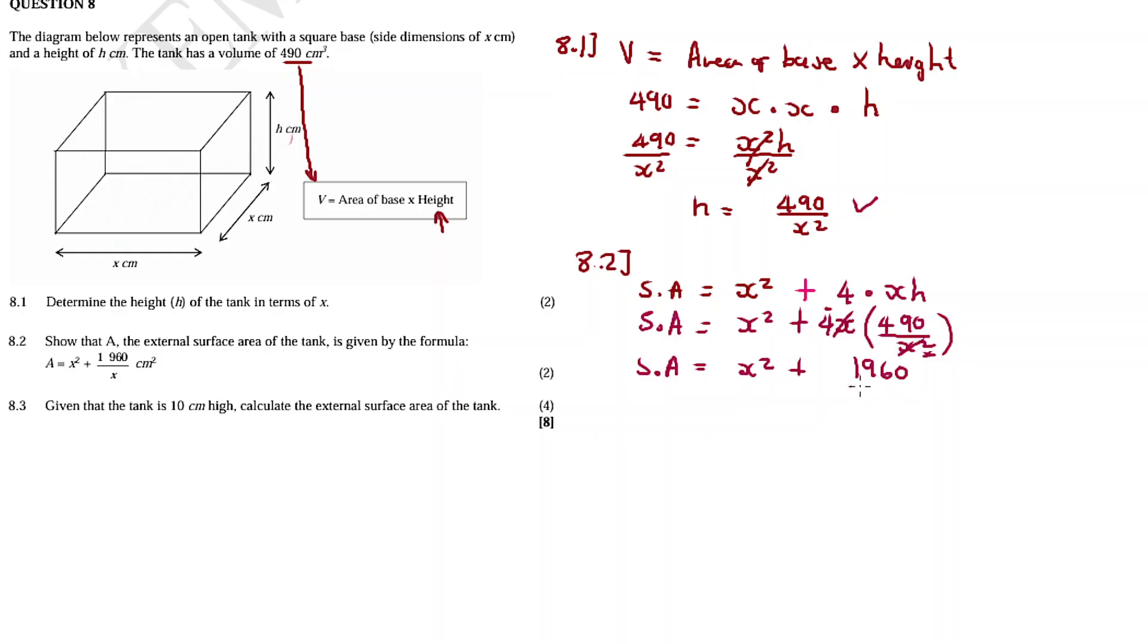8.3, they want us to use the given height of 10 centimeters to calculate the external area of the tank, the external area of the tank. Okay, so the first thing is to calculate what is x. We already have the formula for the surface area, it's this one from 8.2. 8.3, they are now giving us, saying to us, hey we have h. What is h? h is 10. Calculate the surface area. We need x though to calculate the surface area. How do we do that? We use the h to get the x, going back to the first question.